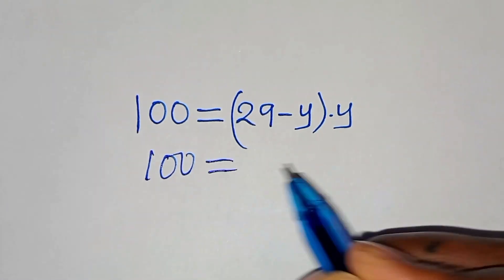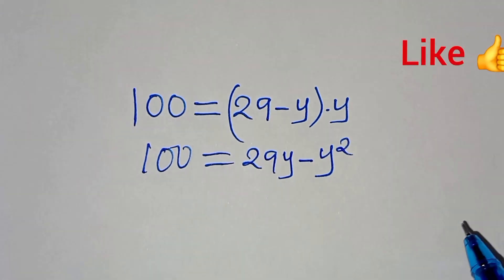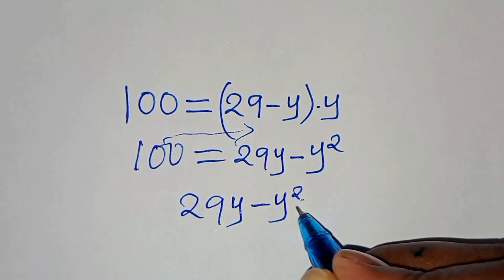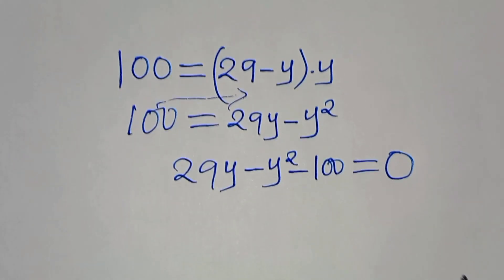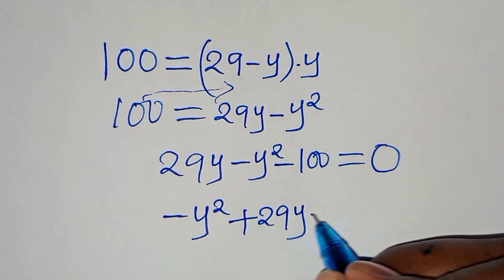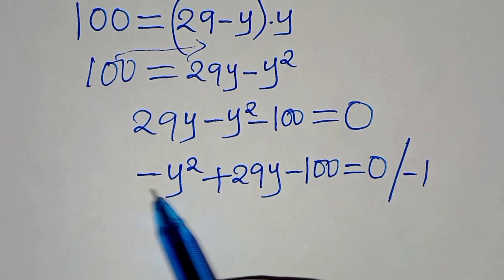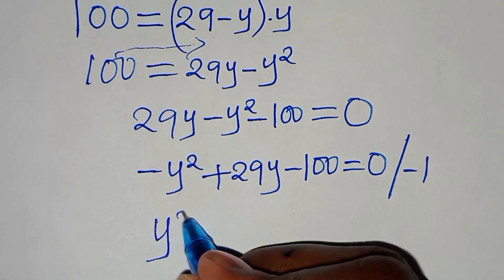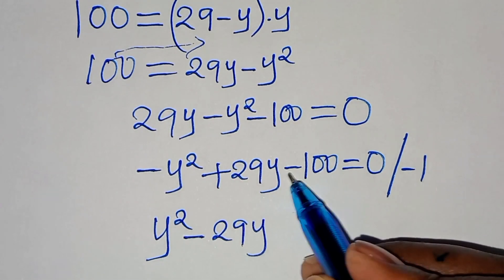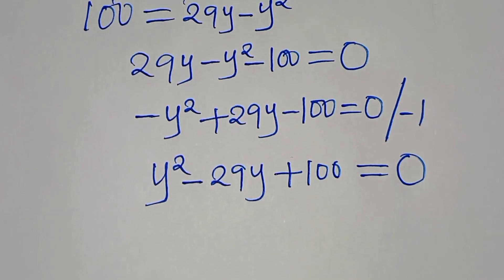So we have 100 equals 29y minus y squared. Taking 100 to the right-hand side: 29y minus y squared minus 100 equals 0. Rearranging: minus y squared plus 29y minus 100 equals 0. Dividing both sides by minus 1 gives us y squared minus 29y plus 100 equals 0.